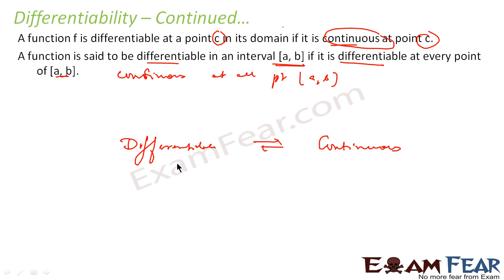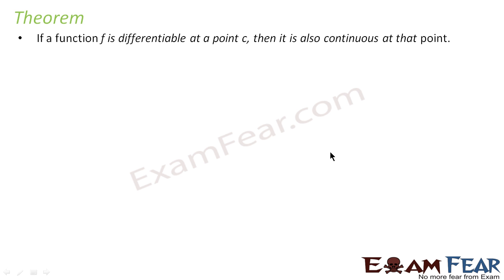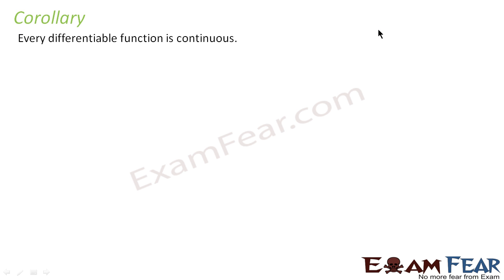Whether you are talking about one point or all points, the reverse is also true. If it is continuous it is differentiable, and if it is differentiable it is continuous — both are true. The theorem is: if a function is differentiable at point c, it is continuous at that point. The corollary is also true — every differentiable function is continuous. So differentiable and continuous both go hand in hand.